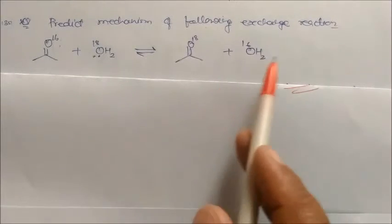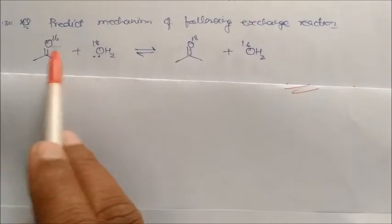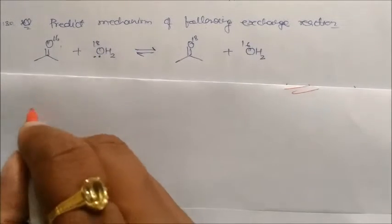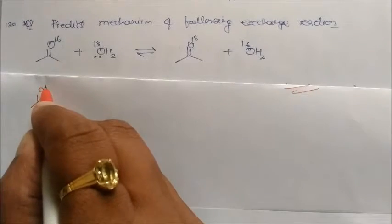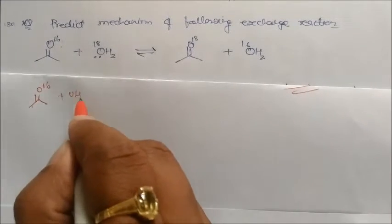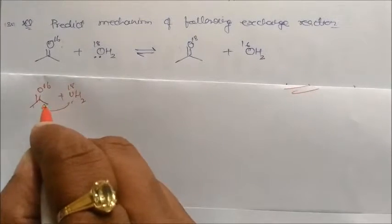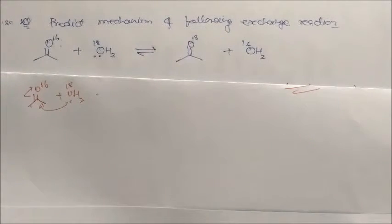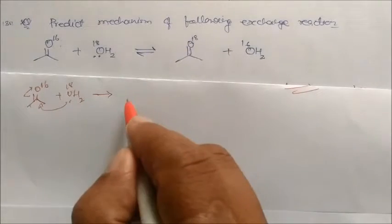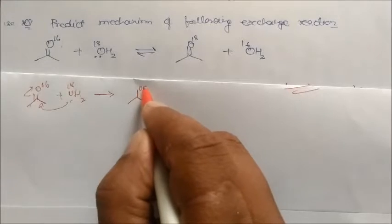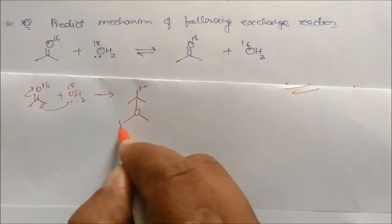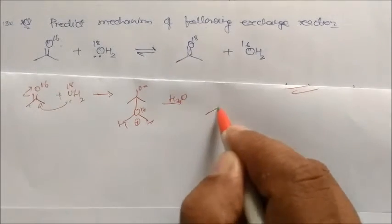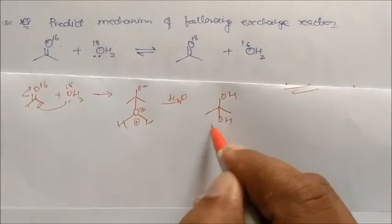Predict the mechanism of the following isotope exchange reaction: H2O with O-16 and H2O with O-18 (two different isotopes of oxygen) giving exchange products. The reaction starts: the O-18 lone pair attacks over the carbon with O-16 and is delocalized. On delocalization, you get O-negative and O-18H with a positive charge. On hydrolysis, you get OH and OH-18.